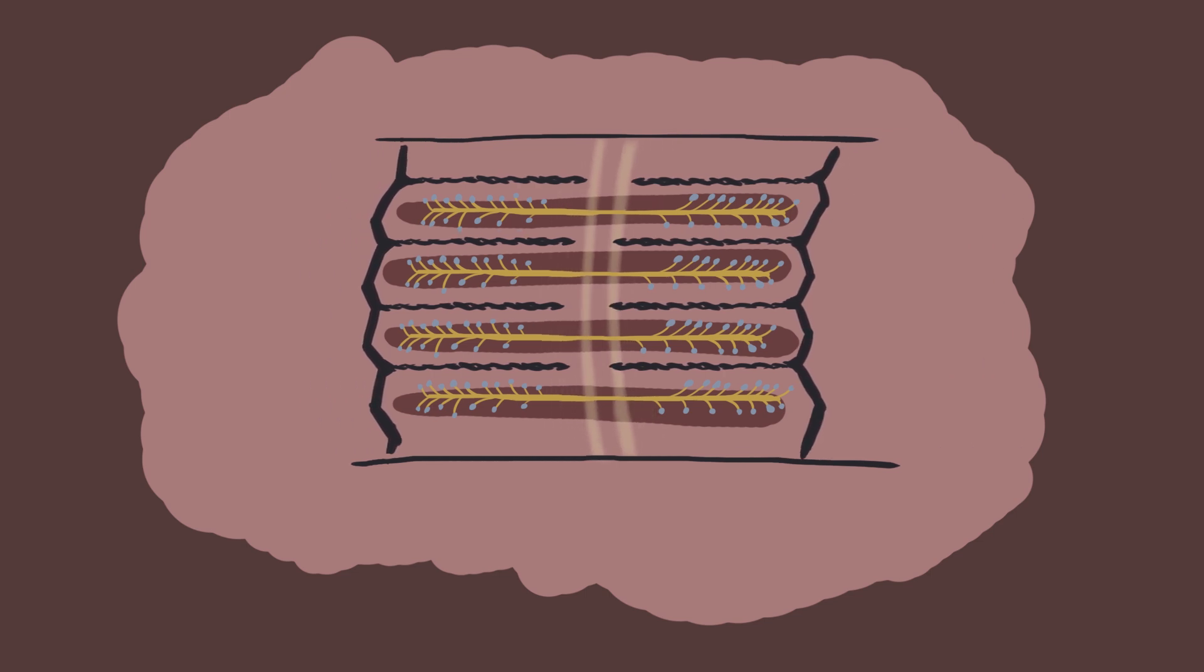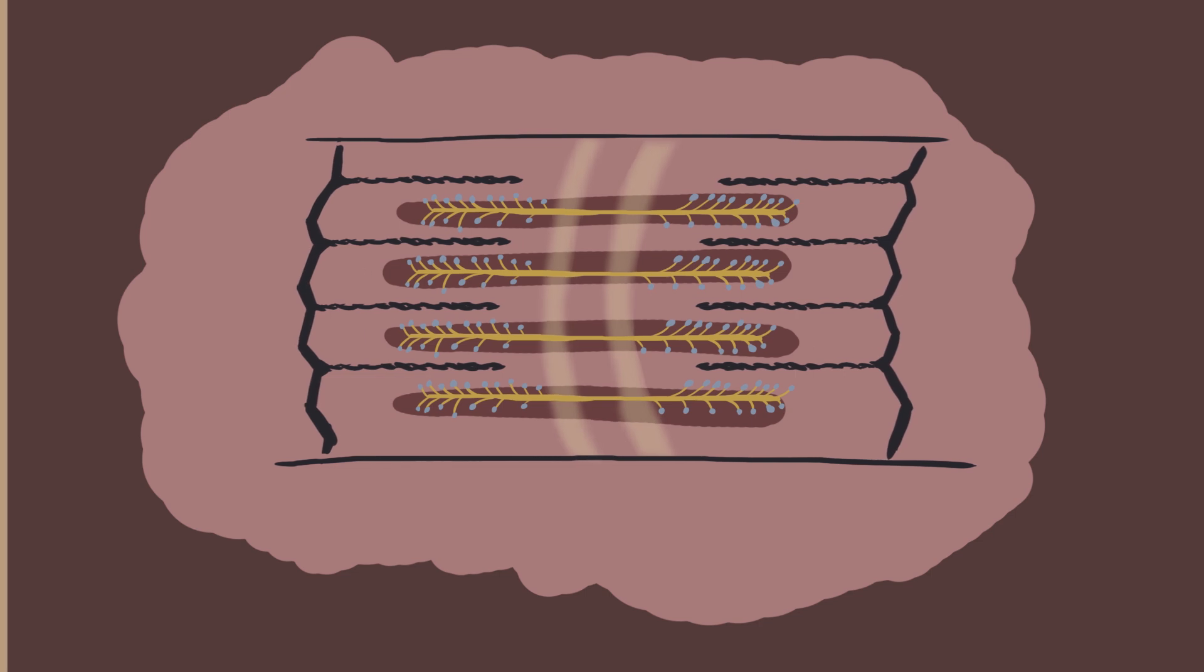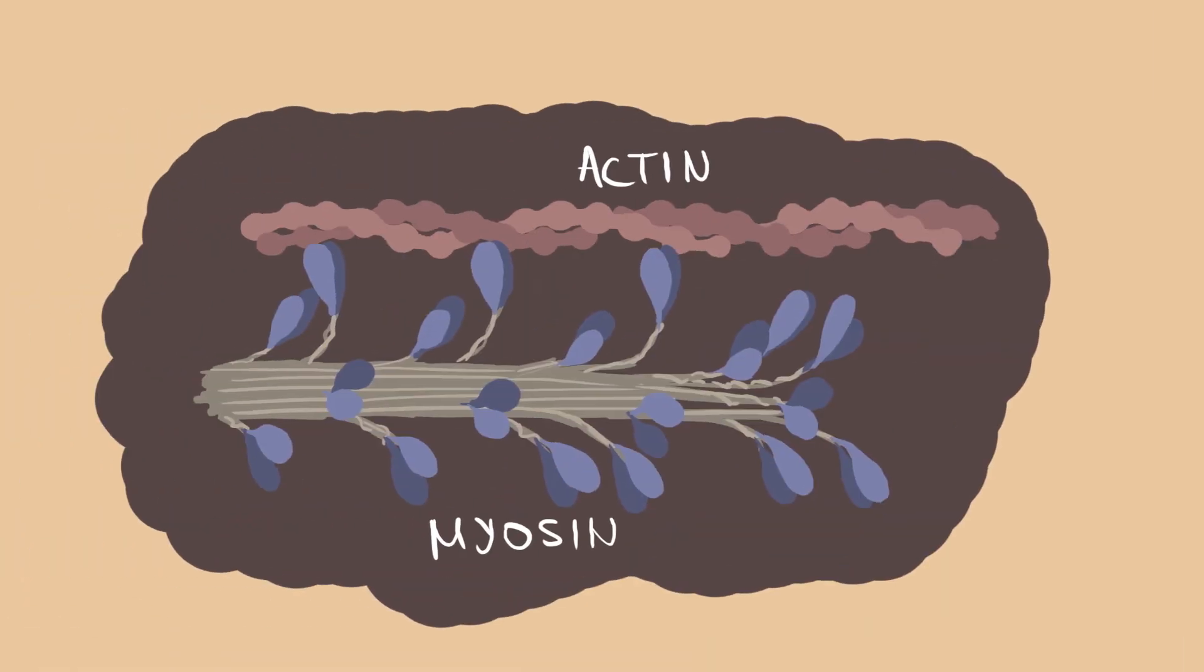In the middle, we have a protein called myosin. At the molecular level, myosin molecules are arranged in a cylinder and have these heads.